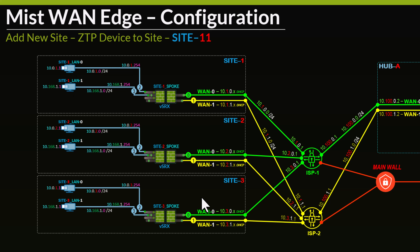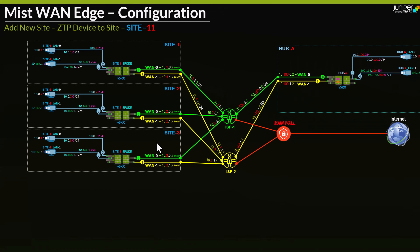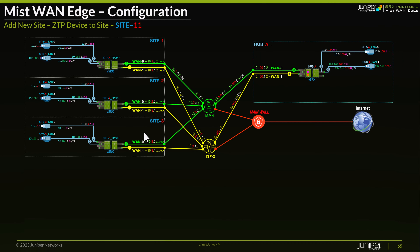If you haven't watched the previous sections in part 2, I encourage you to go back and watch them, as I go step-by-step on how you would onboard VSRXs using the adopt method, and also configure the LAN segments with the different use cases such as source NAT. But in this section, I want to add an additional site.